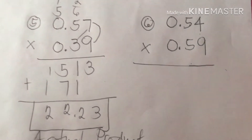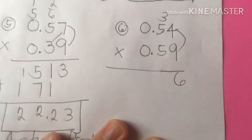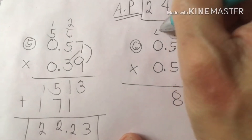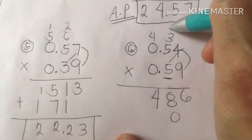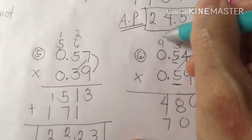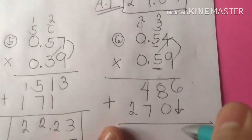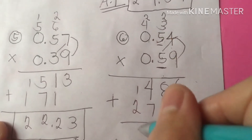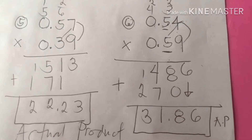Next, number 6: 0.54 times 0.59. 9 times 4 is 36 — bring down 6, regroup 3. 5 times 9 is 45, plus 3 is 48 — regroup 4. 0 times 9 is 0, bring down 4. Next: 5 times 4 is 20 — bring down 0, regroup 2. 5 times 5 is 25, plus 2 is 27 — regroup 2. 0 times 5 is 0, bring down 2. Then sum up: bring down 6, bring down 8. 4 plus 7 is 11 — regroup 1, that's 3. That completes the actual products for 1 through 6.